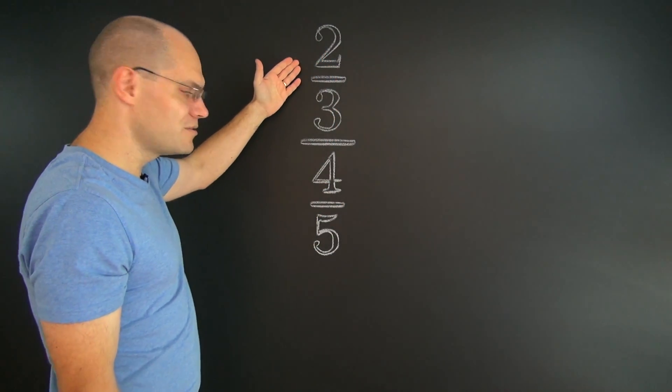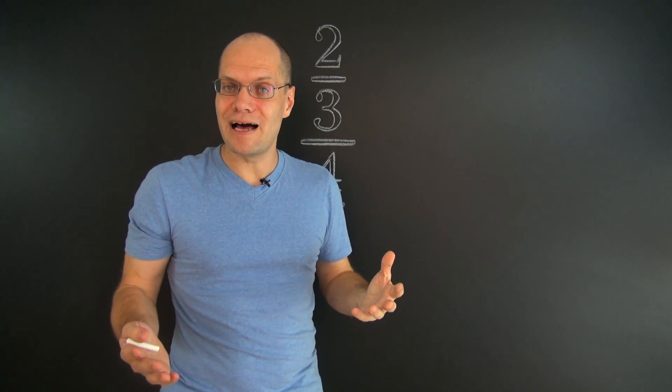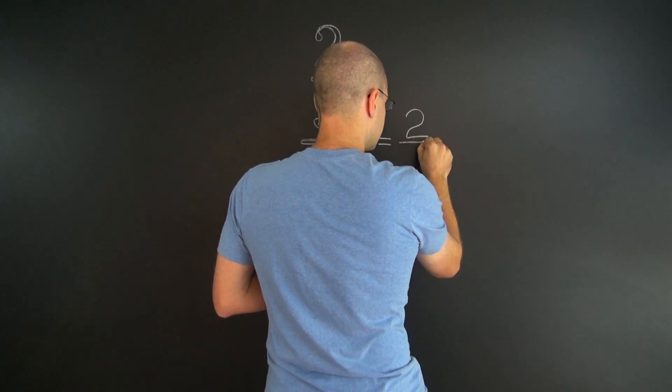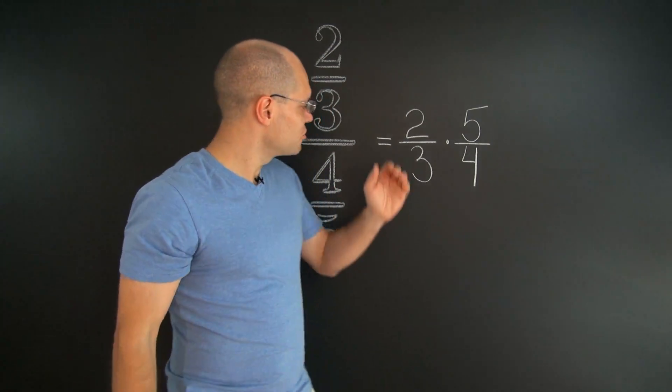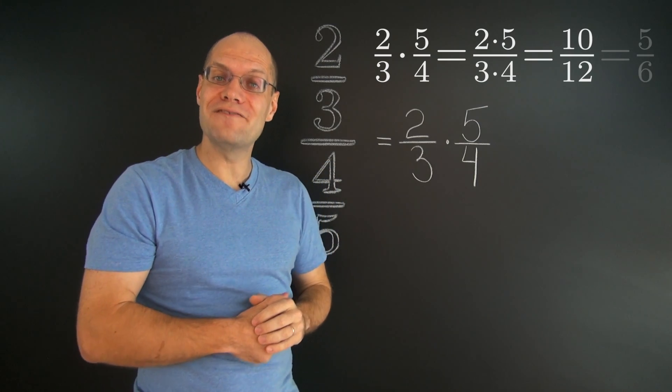So, we have to divide the top, which is two-thirds, by four-fifths. In other words, we have to multiply it by five-fourths. Alright, so the result is ten-twelfths or five-sixths.